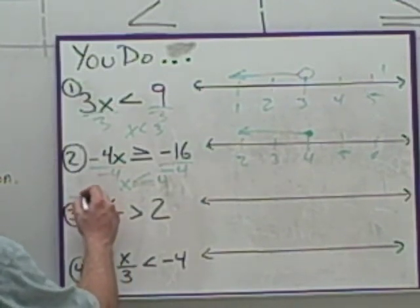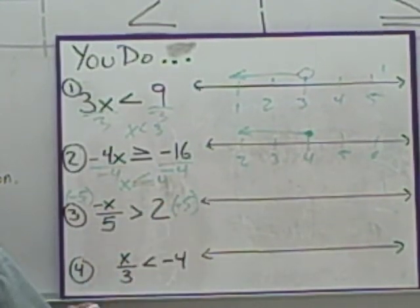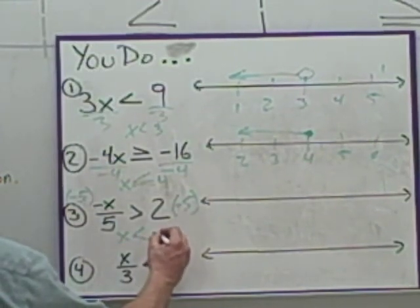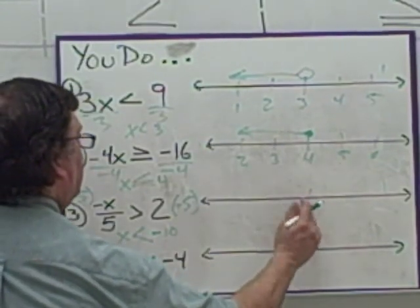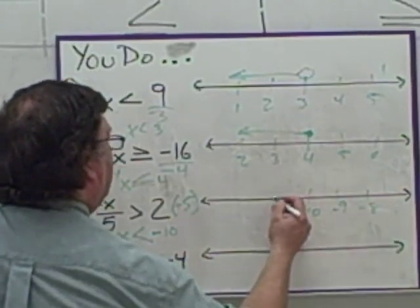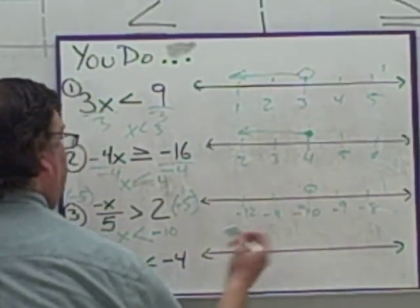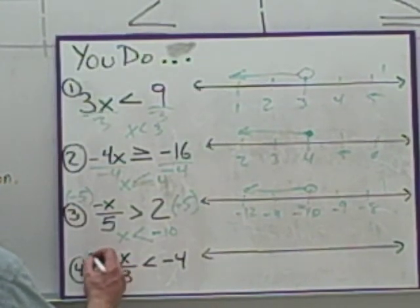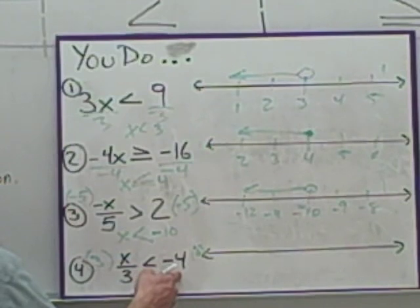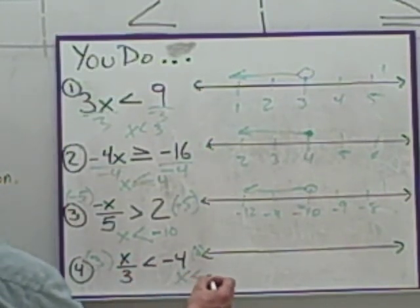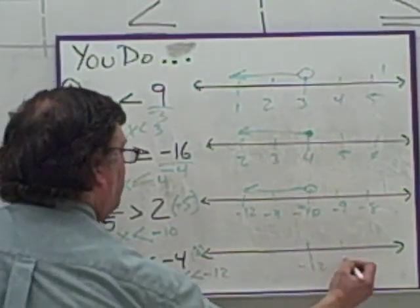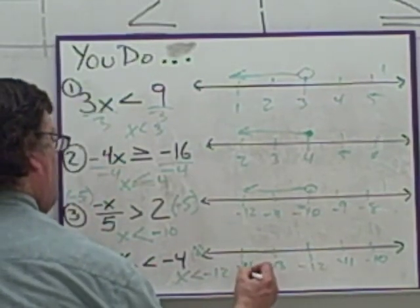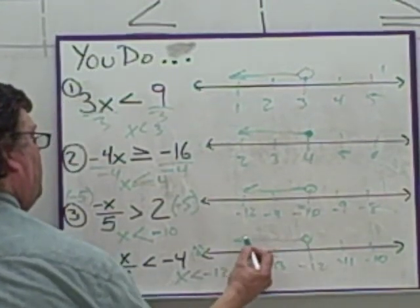Third: we need to multiply by negative five to clear the negative and the five at the same time. Since we're multiplying by a negative, we flip the inequality symbol around. We get x is less than negative ten. Open circle over negative ten — no or equal to — and going in the less-than direction. Fourth: multiplying by a positive three. It doesn't matter that the result is negative — we do not flip this around. We get x is less than negative twelve. Open circle over negative twelve, going in this direction for the graph.